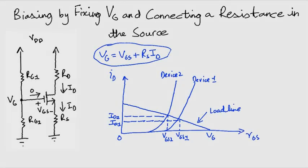We can even make this variability smaller by having a large value for VG and RS. Why? Because the slope of this line is minus 1 over RS. Notice the red line here.